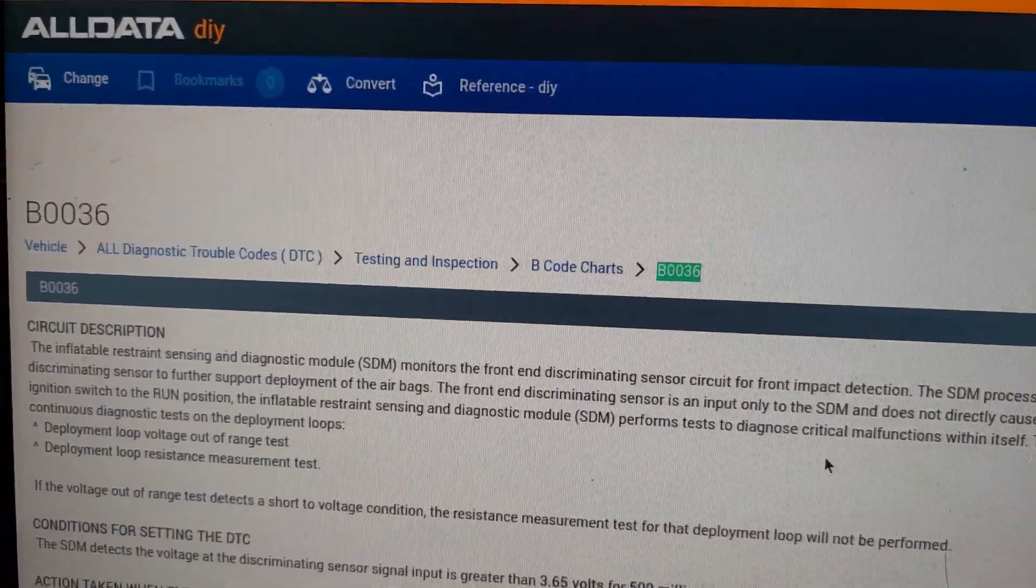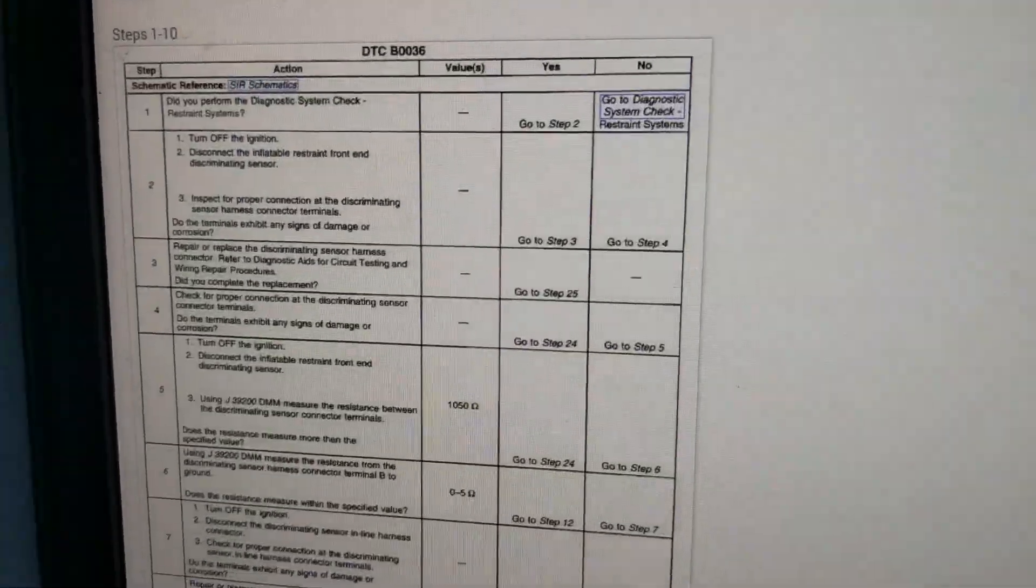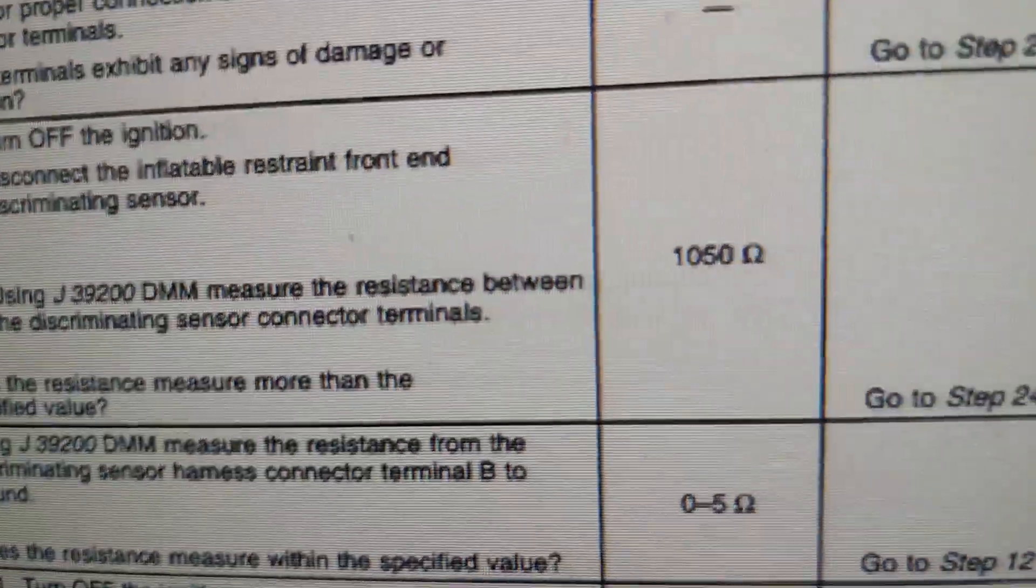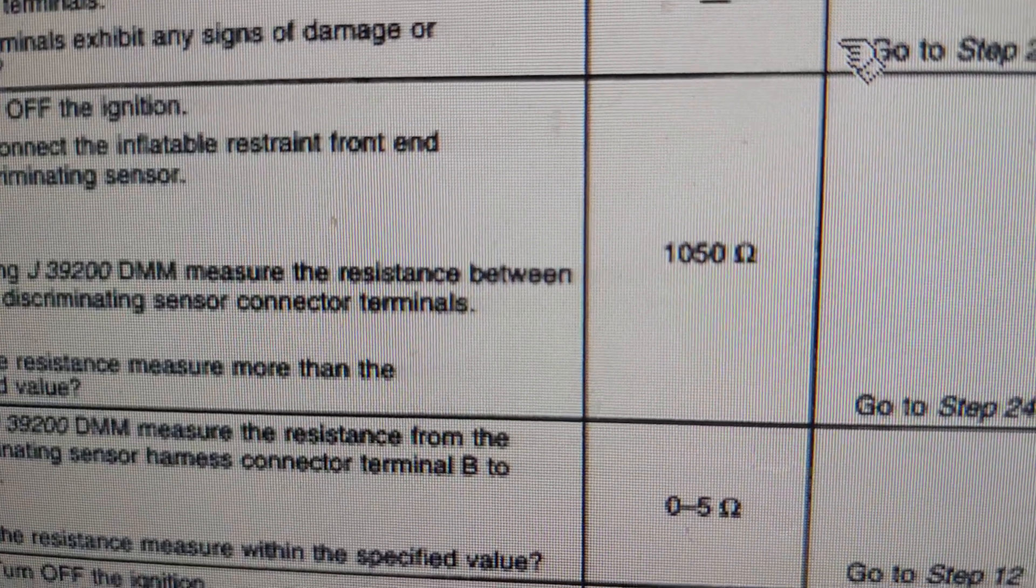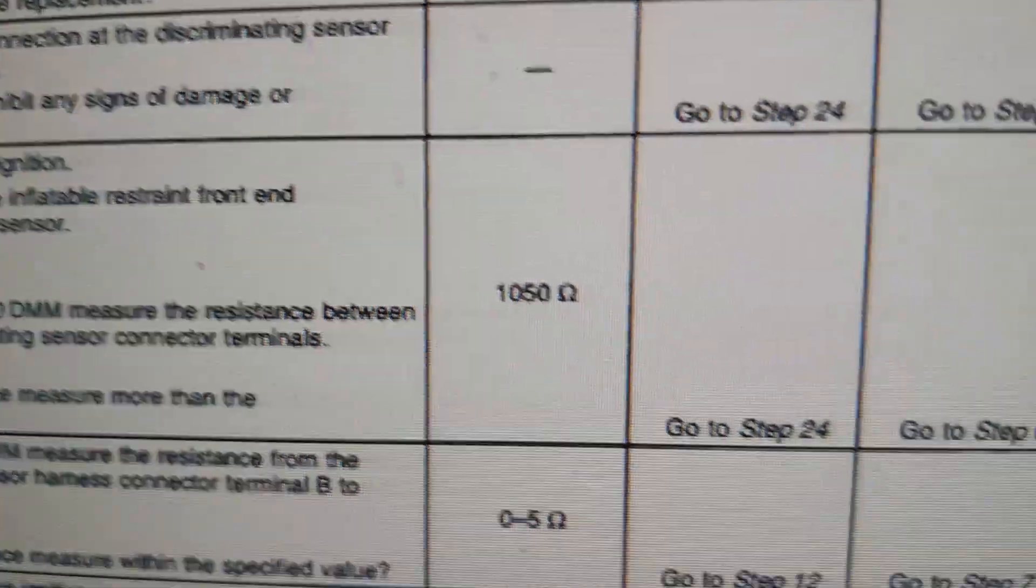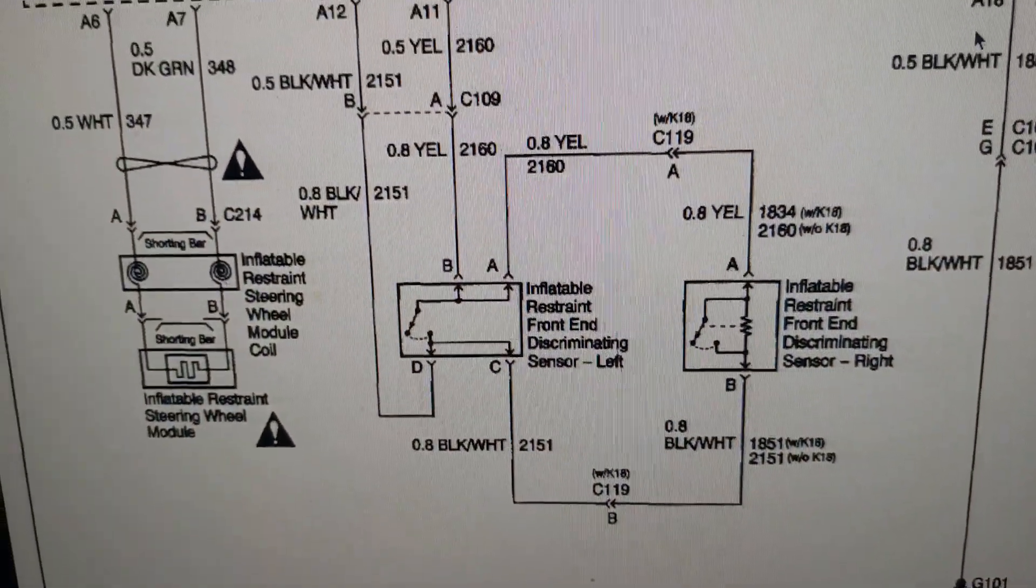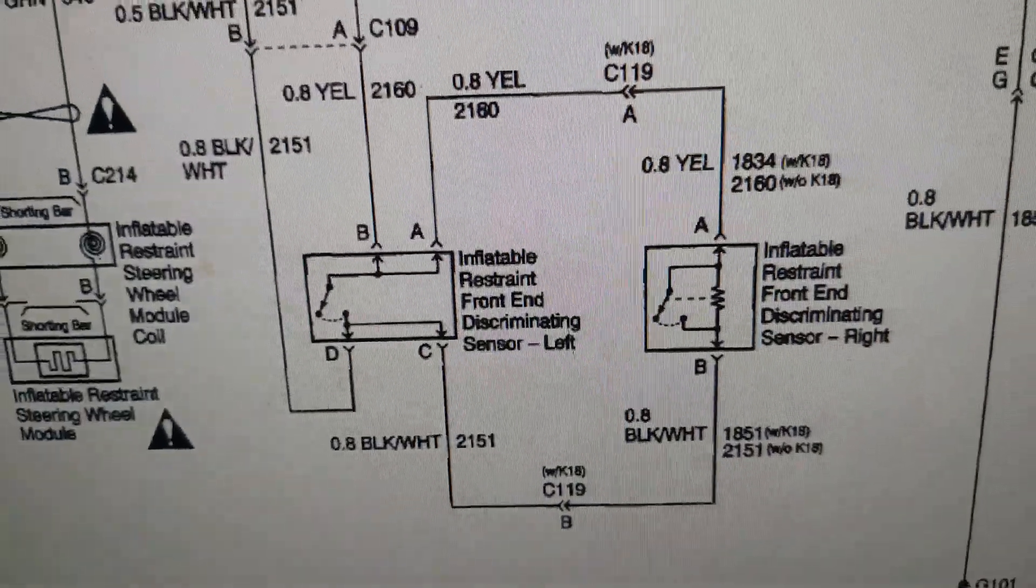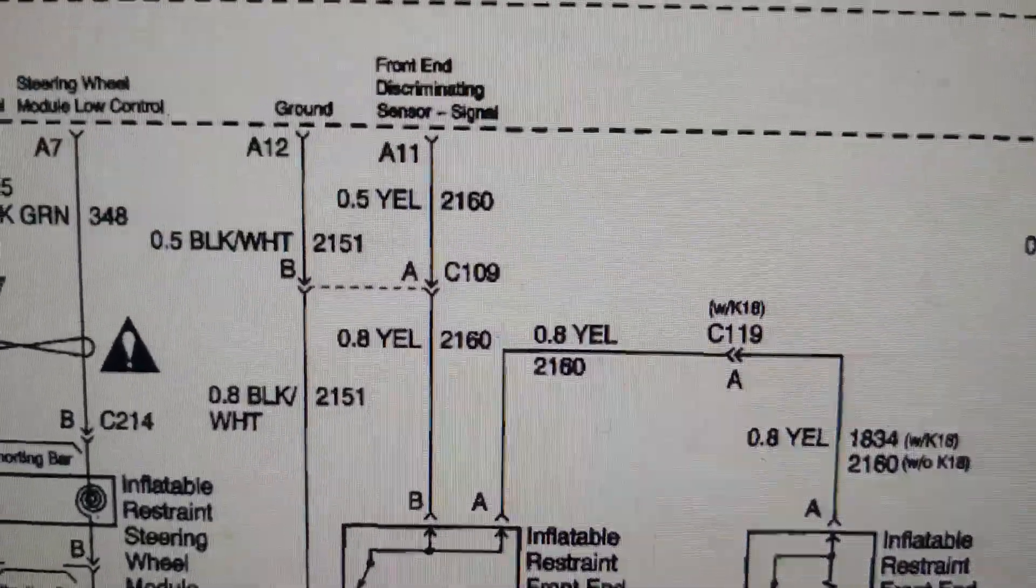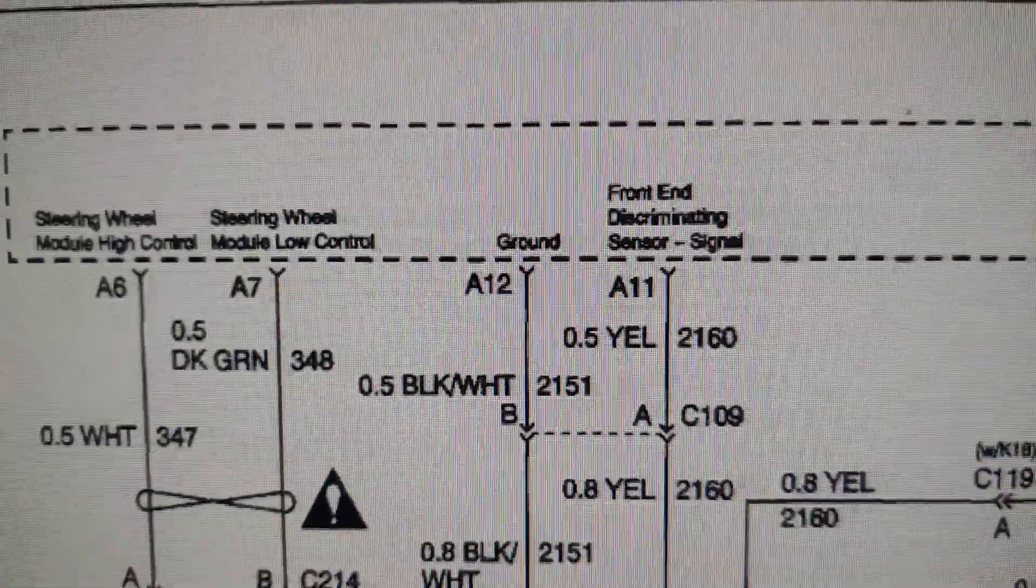Airbag light comes on and off randomly, sometimes even without vibration. We see that these discriminating sensors should be 1050 ohms. If we look here on the wiring diagram, these sensors are daisy-chained together and pass through connector C109, which is your front-end discriminating sensor input and ground.